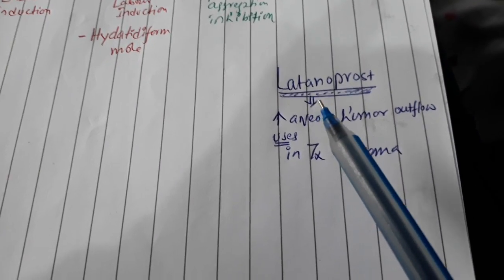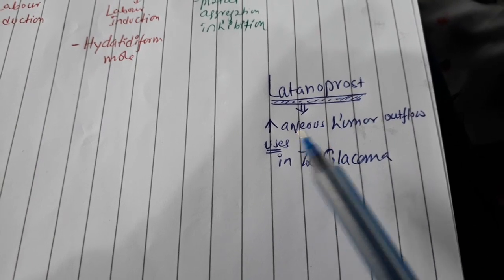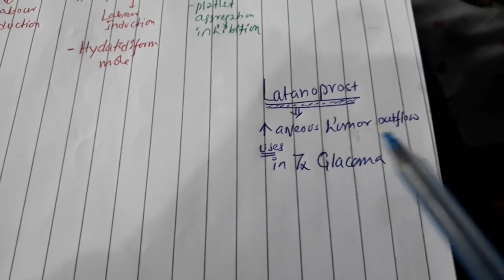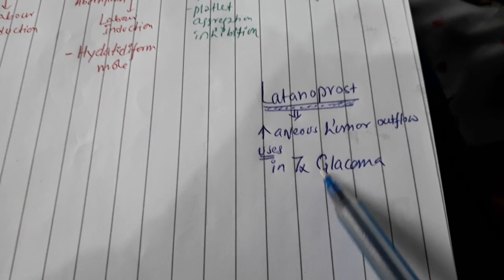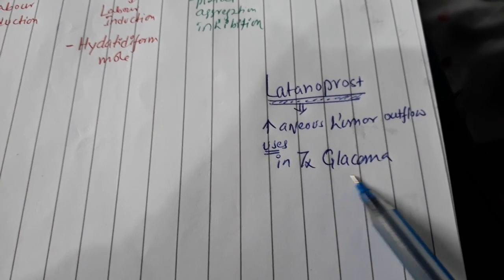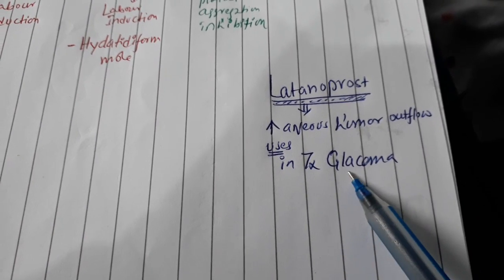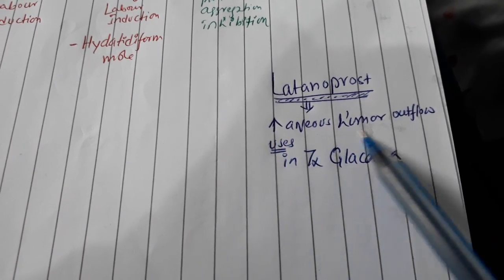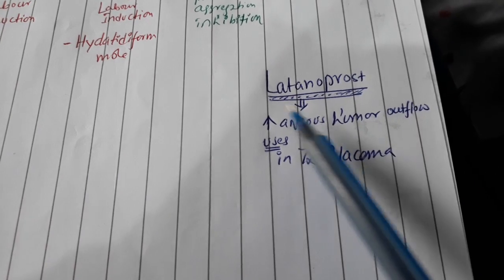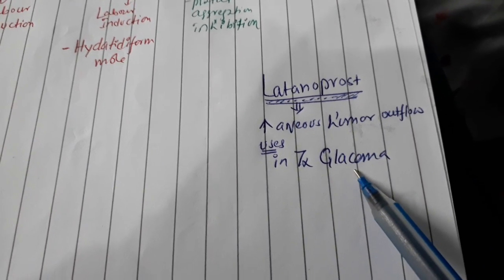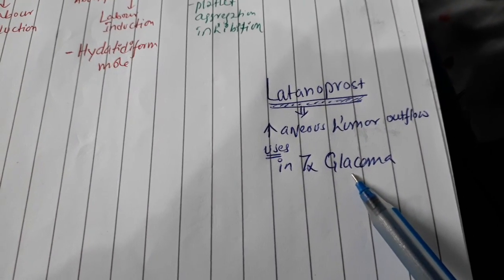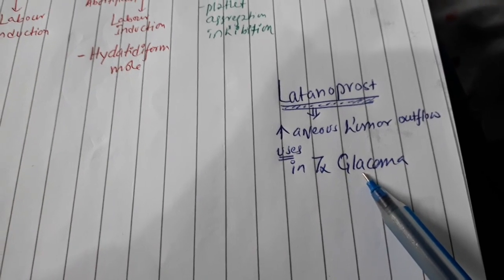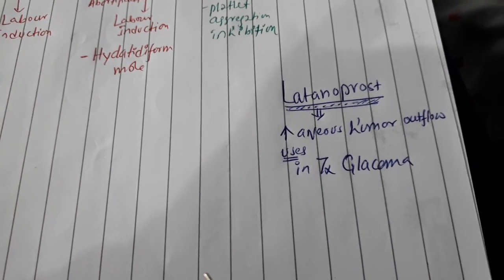Now another one that is called latanoprost. As it increases the outflow of the aqueous humor, it's used in glaucoma, but closed-angle glaucoma. Because in closed-angle glaucoma there is obstruction in the outflow. As it increases the outflow, that's why latanoprost can be used in closed-angle glaucoma. For the open-angle glaucoma we use bimatoprost and travoprost.